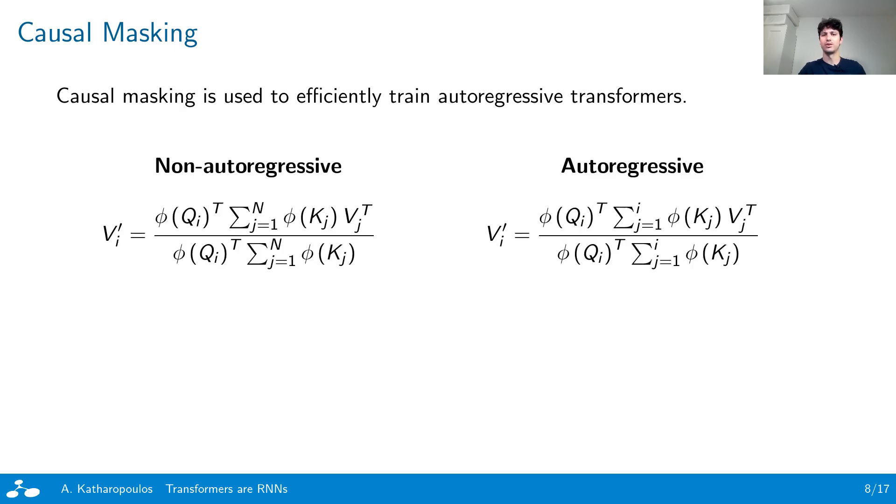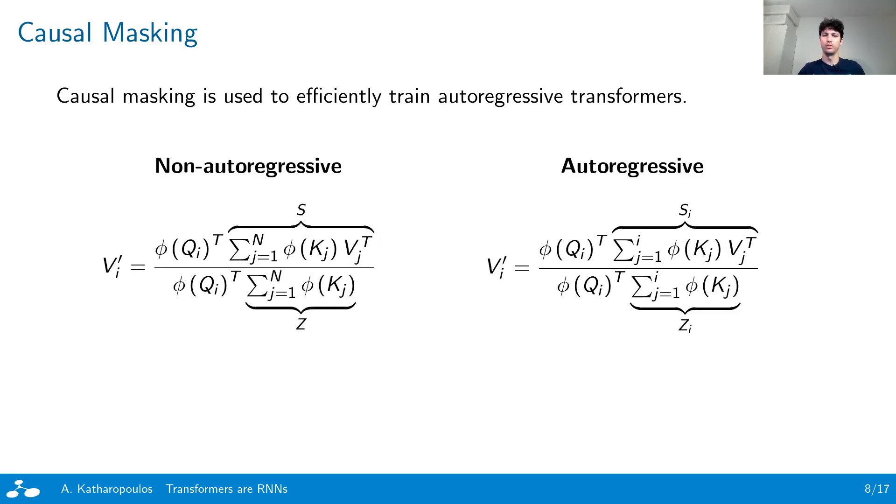Using our kernelization and associativity property trick, we can express the attention computation as shown in the slide. Note that for the autoregressive case, it is not possible to simply multiply the keys with the values first and then with the queries. The reason is that each query is multiplied with a different key-value matrix and normalizer, denoted here as S_i and Z_i. Naively computing S_i and Z_i for each query would make the algorithmic complexity again quadratic with respect to the sequence length.